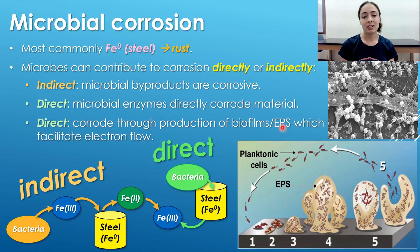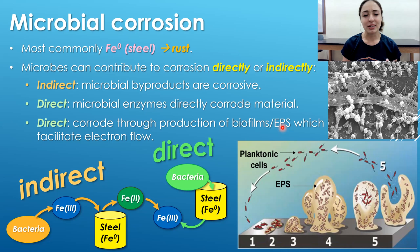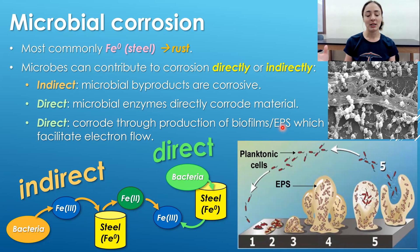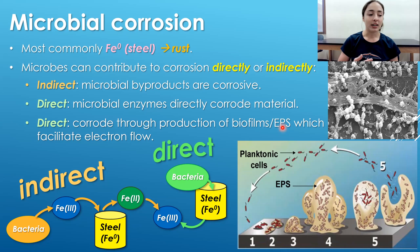EPS — extracellular polymeric substances — is a mucus-like material bacteria produce. It can immobilize metals that are toxic, fix bacteria to a mineral surface they want to continue feeding on, or create a favorable micro-environment for growth. When microbial colonies grow together, the EPS becomes a biofilm: a large film of EPS with entire microbial communities living within it, maintaining that favorable micro-environment.